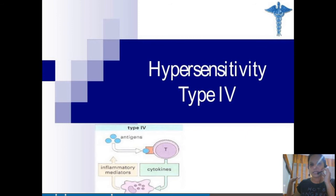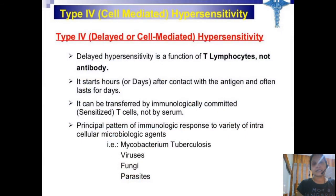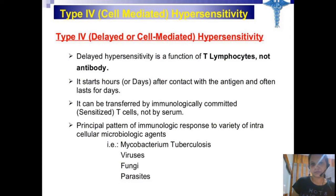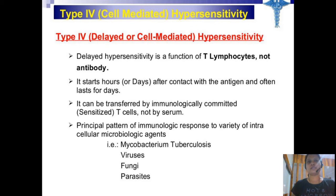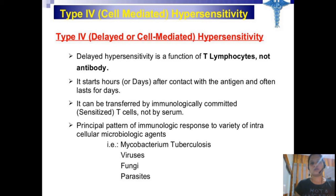Now let's look at type 4 hypersensitivity. It is called delayed type or cell-mediated hypersensitivity. It is caused by T lymphocytes and not by antibodies. It starts hours or days after contact with an antigen and often lasts four days. It can be transferred by immunologically committed sensitized T cells and not by serum.